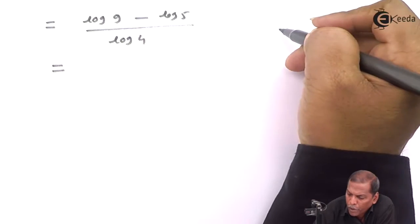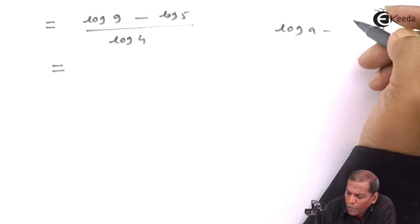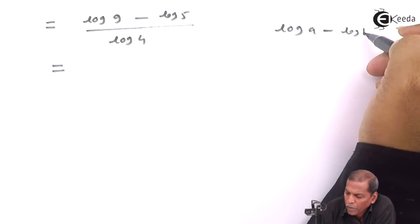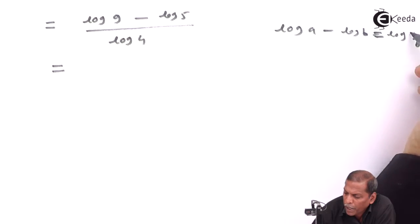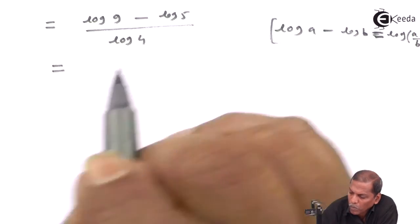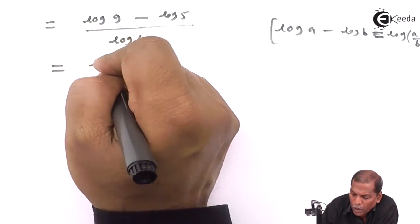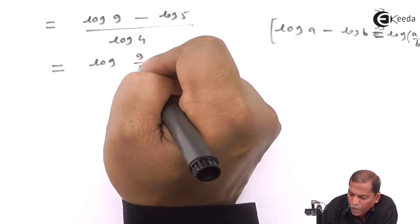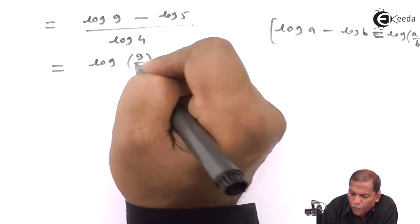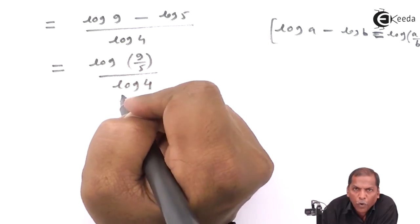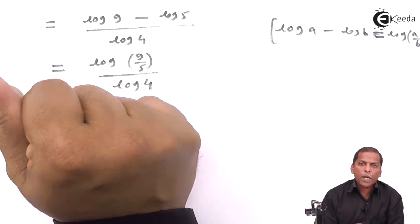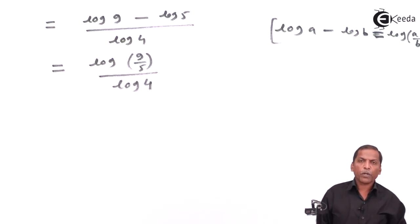In the numerator we use the rule that log a minus log b equals log of a upon b. So here we have log of nine upon five in the numerator, divided by log four. This is the required solution for the given problem.